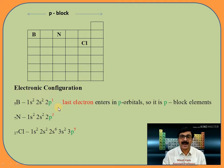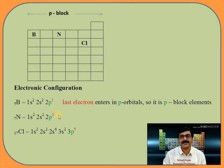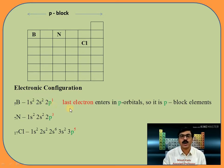Now observe: in all three elements, the last electron enters in a p orbital. In boron, last electron enters in 2p orbital. In nitrogen, last electron enters in 2p orbital. And in chlorine, the last electron enters in 3p orbital. So when the last electron enters in a p orbital, it is called a P block element.